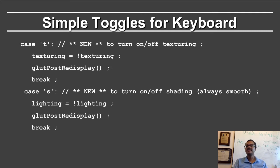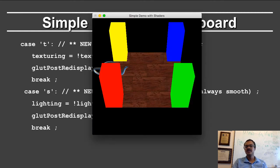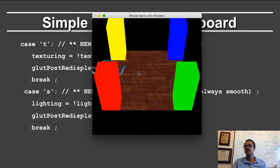The keyboard has some simple toggles, most notably T for turning on and off texturing. After this, I queue up the display routine and call postRedisplay. S turns on and off shading, which we won't be talking about here, but you can experiment with it in the program. I can turn T on and off, and notice I can still zoom in and zoom out.